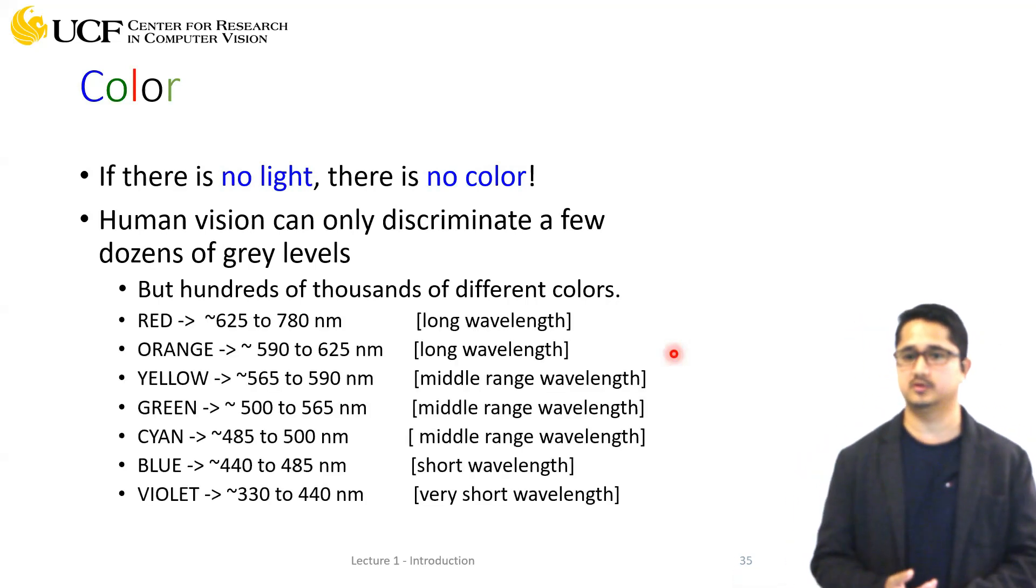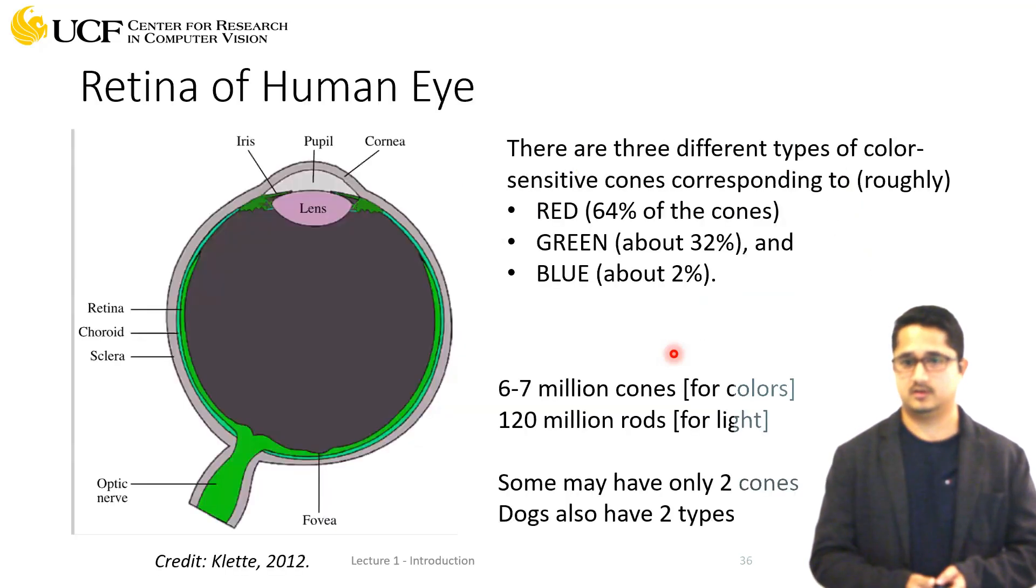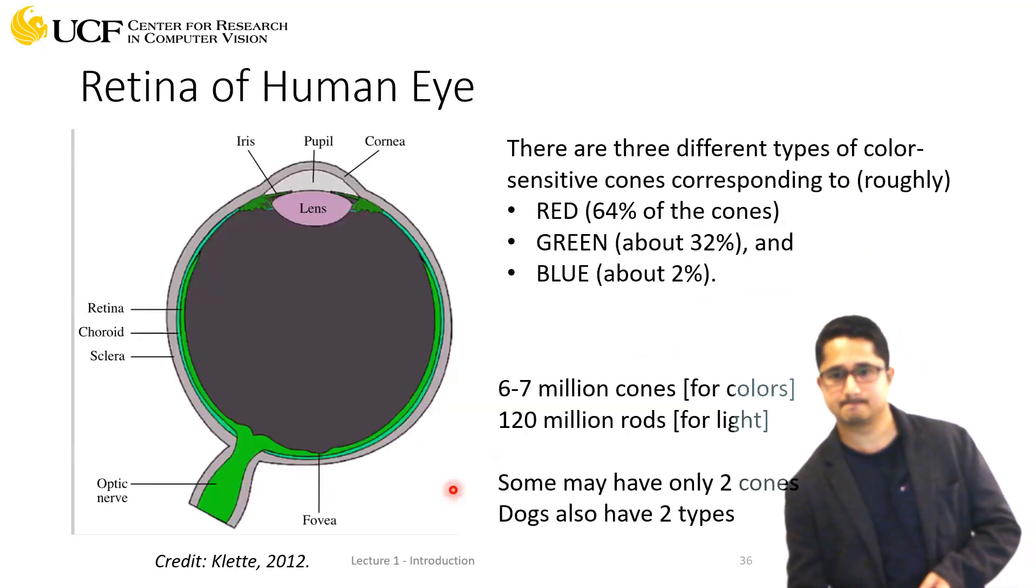Regarding grayscale, we can only discriminate between a bunch of grayscale values. When it comes to colors, we can discriminate between thousands of different colors, and all that is credit to the cones we have in our fovea.